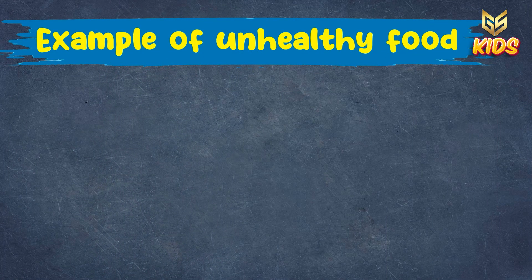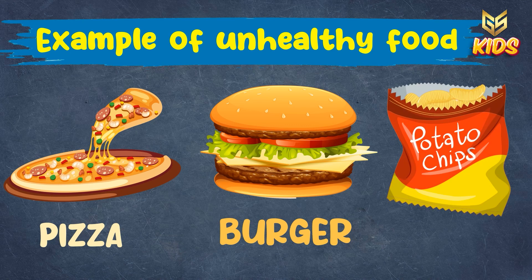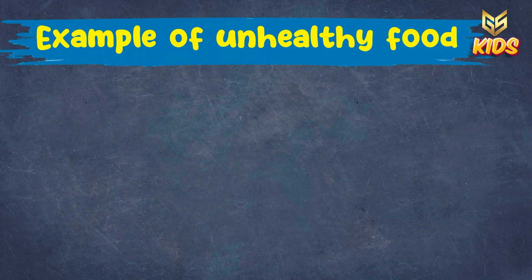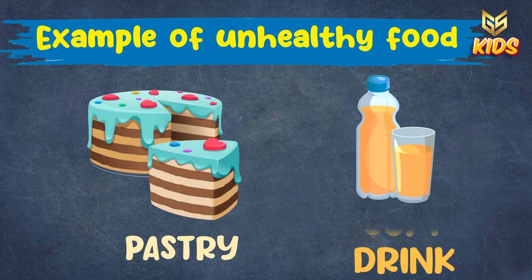Now look at some examples of unhealthy food. This picture consists of pizza, burger, and chips — which are all your favorites, right? But we should try to avoid them as they are not healthy for our health. Next comes another set of examples of unhealthy food: pastry and soft drink. Do you love pastries? We all love pastries, right? But we should try to limit them, as they are not good for our health. Try to avoid them.